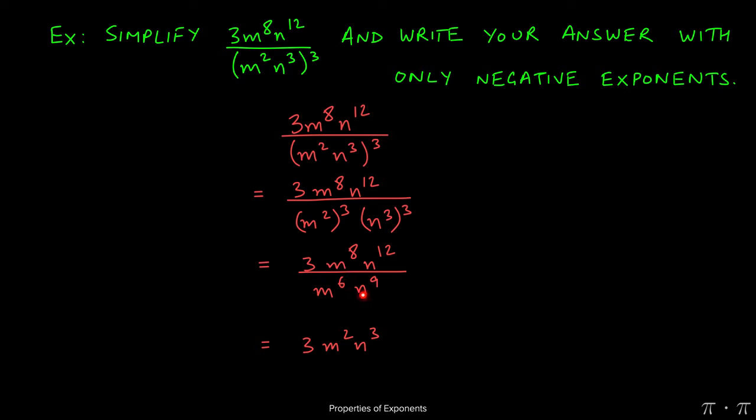n to the 12th over n to the 9th. Again, bases are same. We're dividing. Top power minus bottom power will give us n to the 3rd.